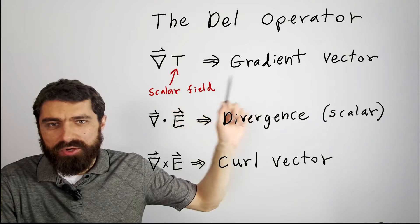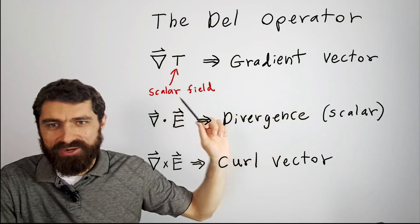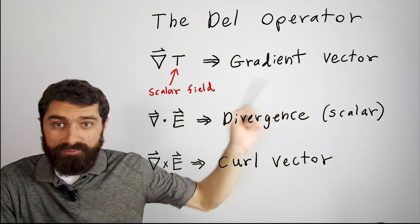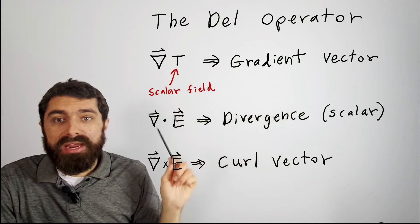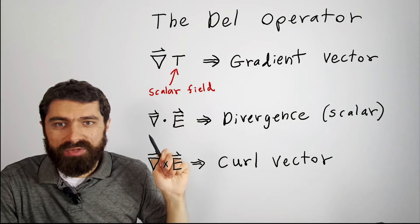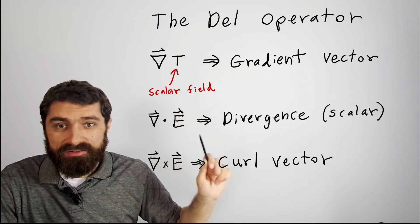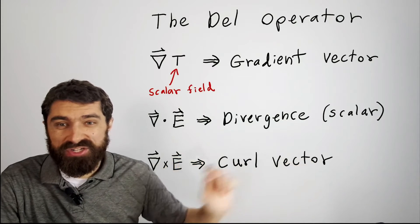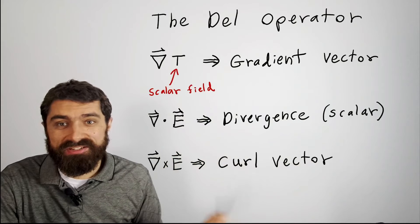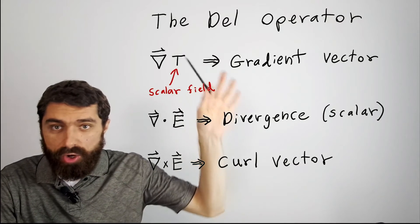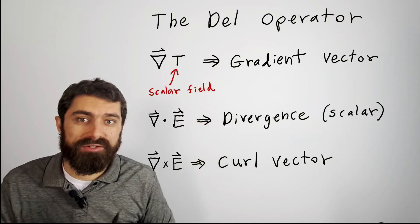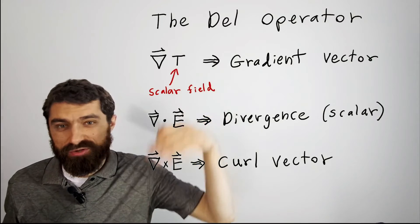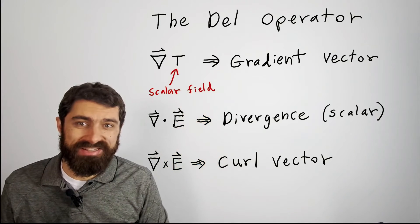So this here is called the gradient vector. And I'll explain how this works in this video. And in following videos, I'll explain what del dot E or some vector is, it's called divergence, and what del cross E is. All of these are super useful, interesting concepts, and it's important to understand intuitively what this actually means and what it says.